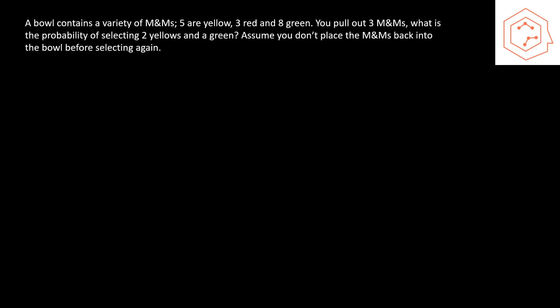Our first question: a bowl contains a variety of M&Ms — five are yellow, three are red, and eight are green. We pull out three of them and want to know the probability of selecting two yellows and one green. It's really important to note that the order in which they are pulled is not specified, so order is irrelevant. The question also tells us to assume we don't place the M&Ms back into the bowl, so this is a non-replacement experiment.